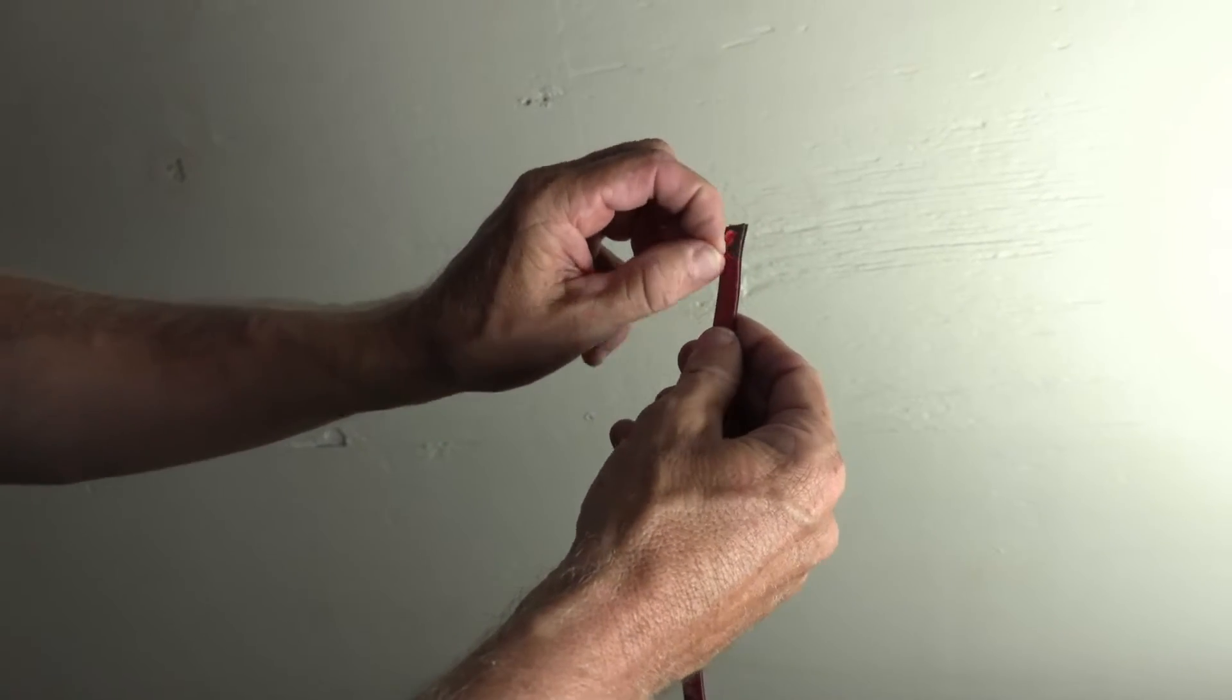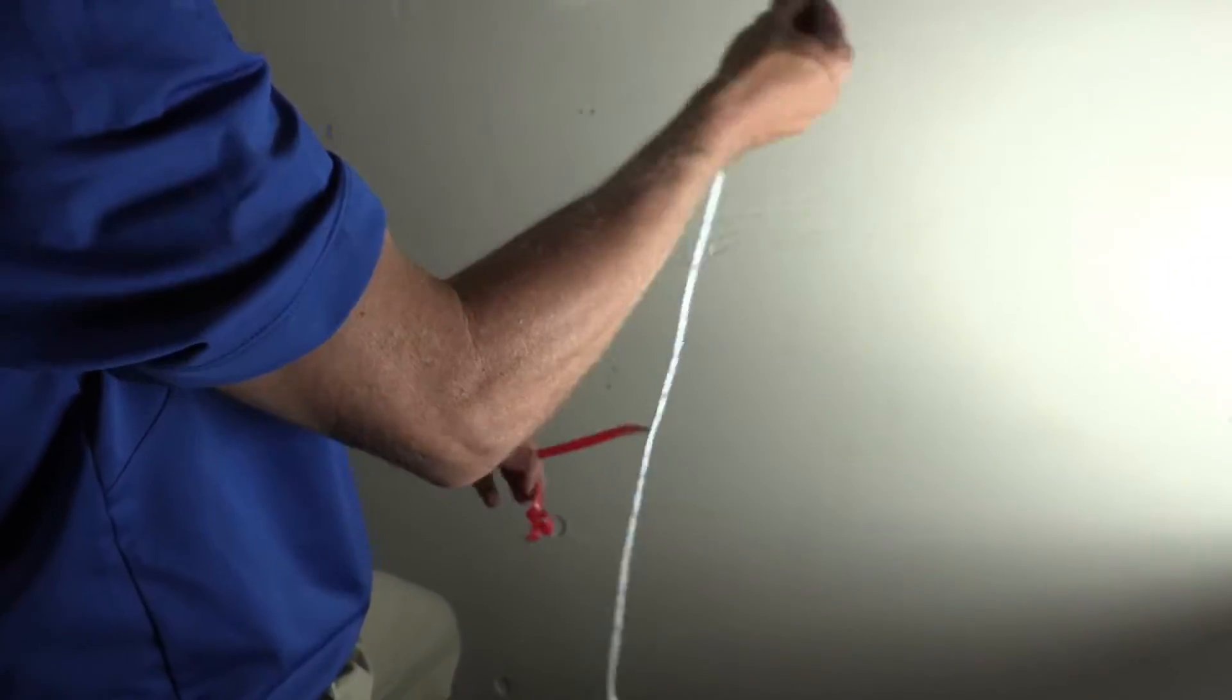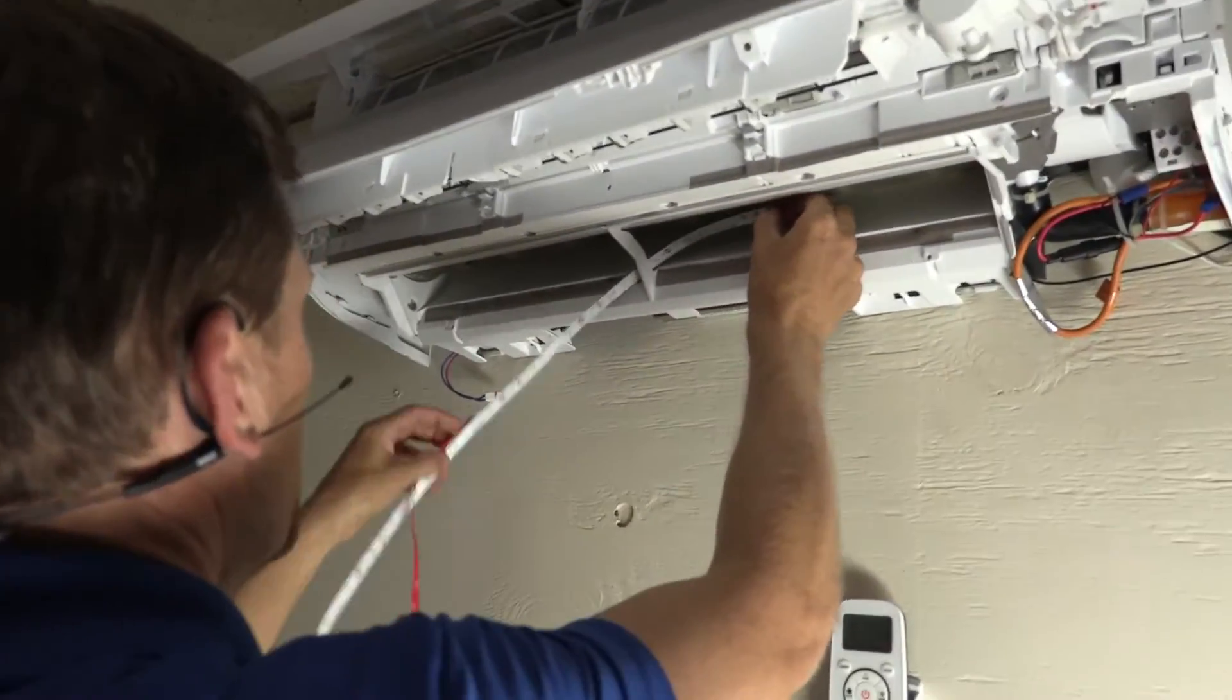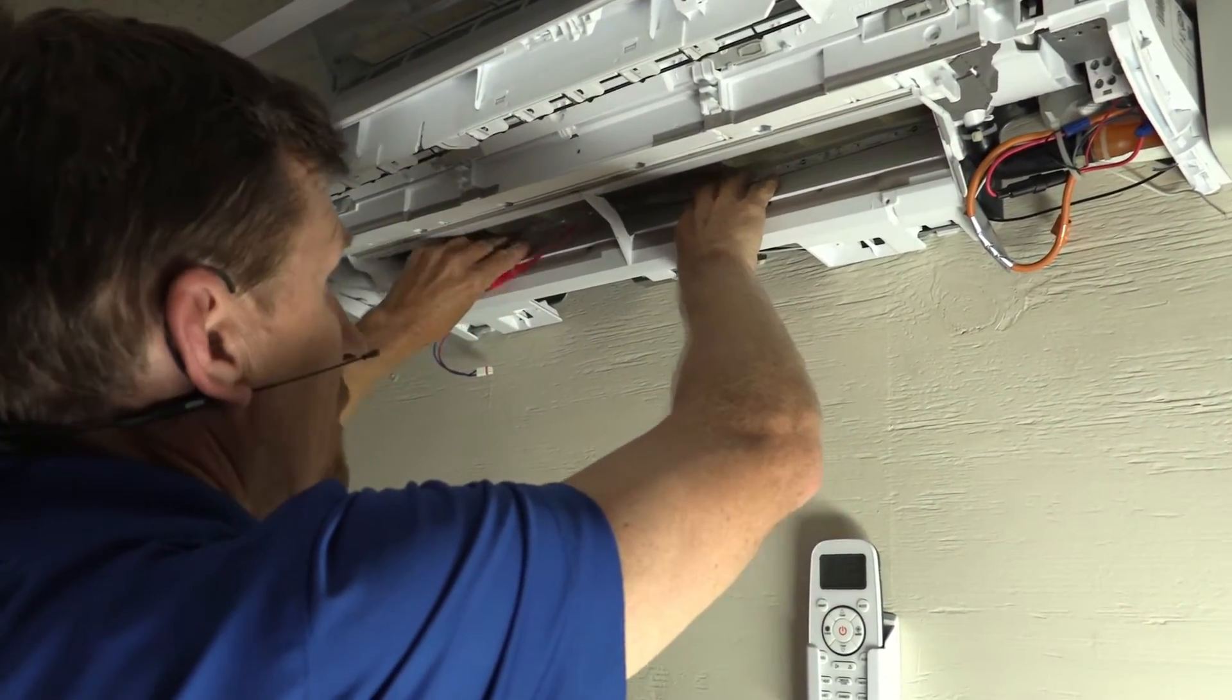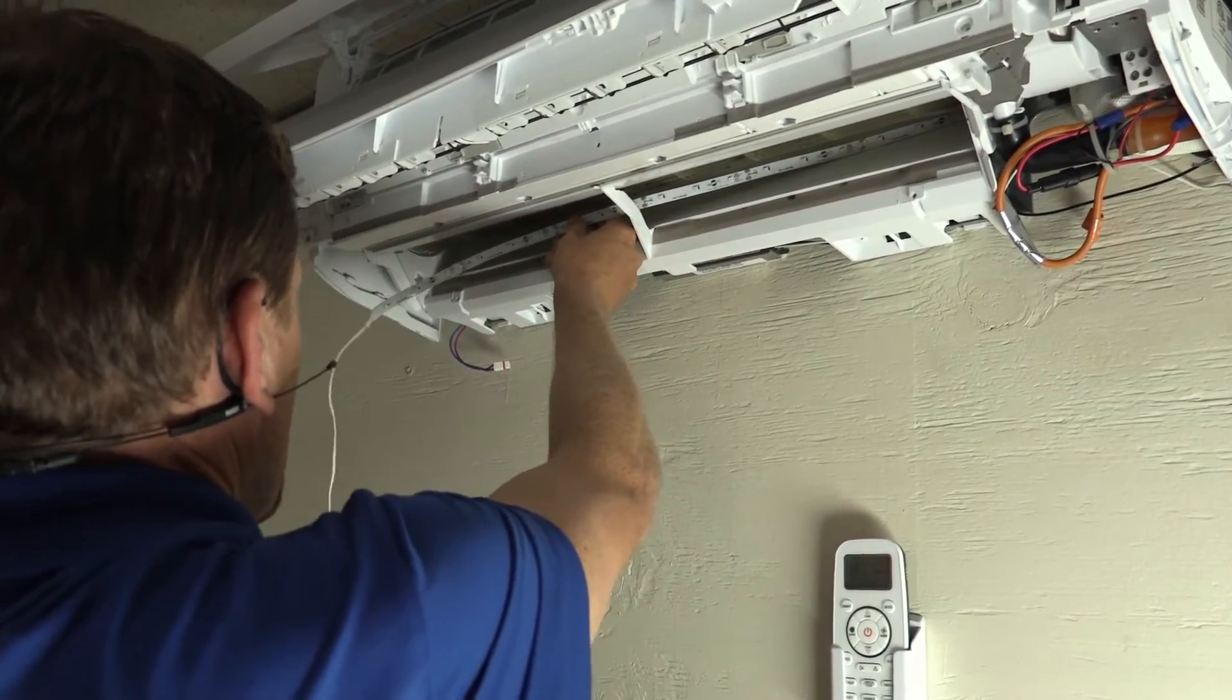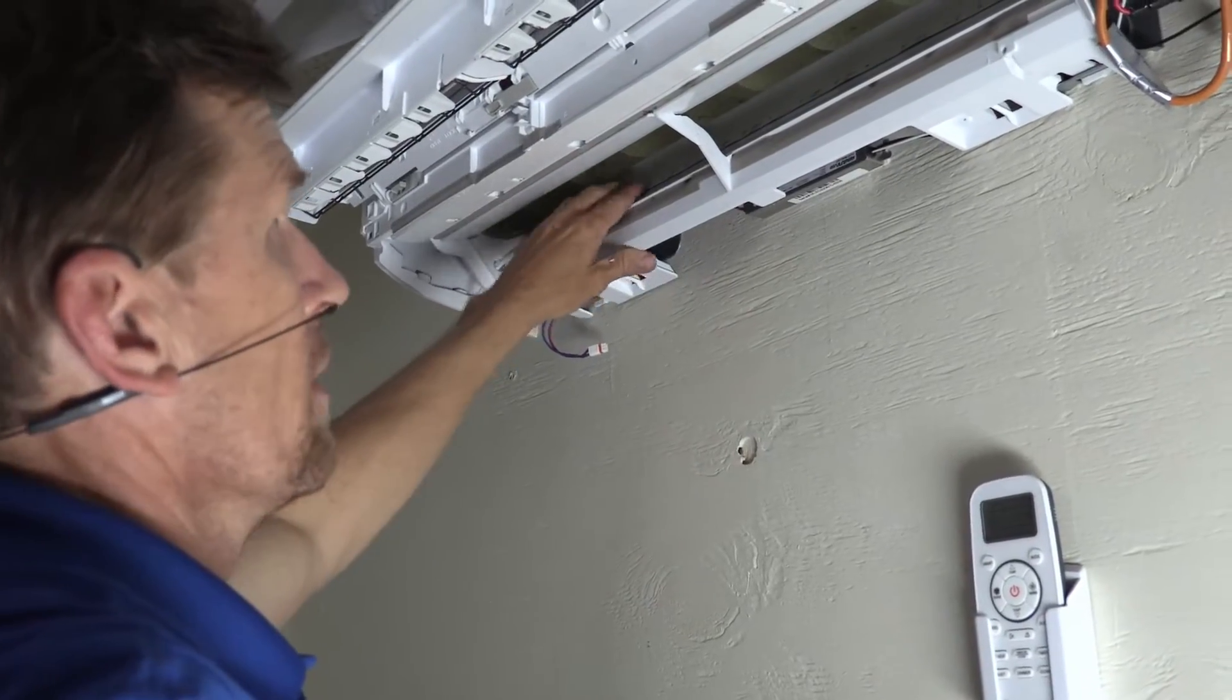We're just going to peel the backing off so we'll get to the adhesive. You don't want to peel it all off. You want to get to a starting point. Feed that through. So what we're doing is we're just going to adhere that and peel this all the way off. And then we're going to feed this connector through the hole that we made. It's very easy to seal that hole up if you would like to.